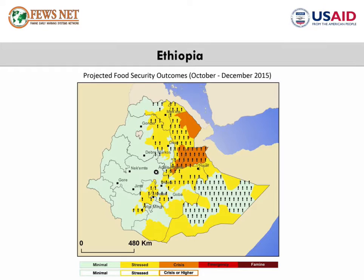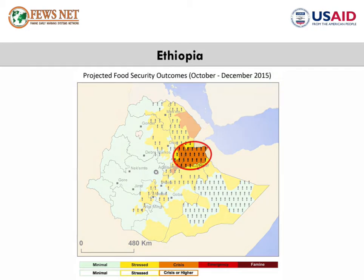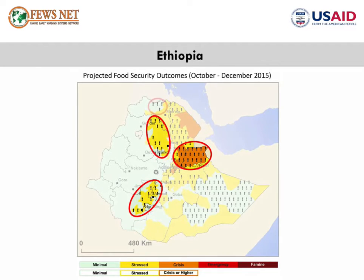Government and international humanitarian assistance is helping in reducing acute food insecurity in these areas. For example, parts of northern Somali region would be classified higher than the current Phase 3 crisis without assistance. Similarly, parts of SNNPR, Amhara, Tigray, and Oromia will remain in Phase 2 stressed through December because of assistance.